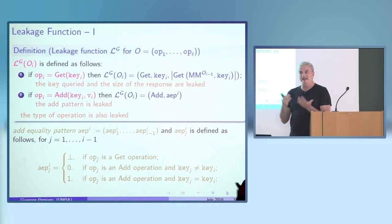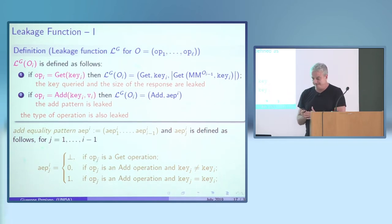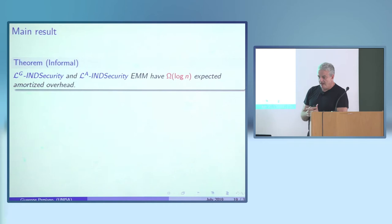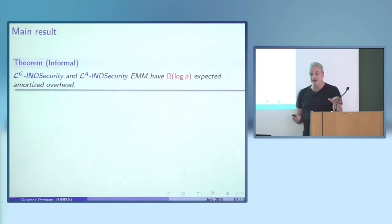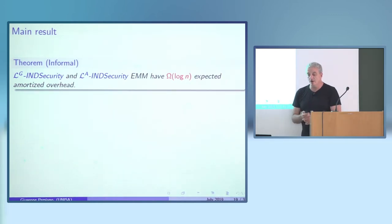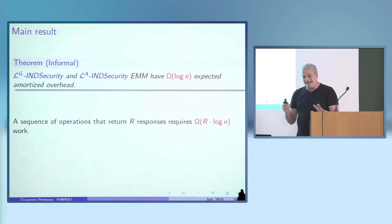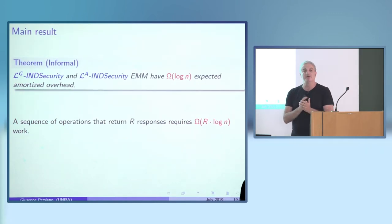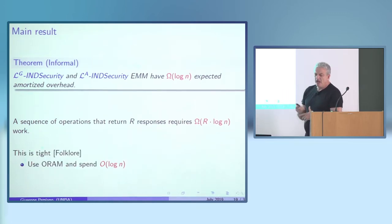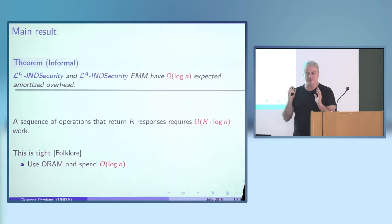The informal theorem: encrypting multi-maps that are secure under this decoupled leakage have log n expected amortized overhead. Concretely, a sequence of operations that returns R total responses requires Omega(R log n) total cell probes. This bound is tight because, by folklore, you can use ORAM and spend log n per operation.